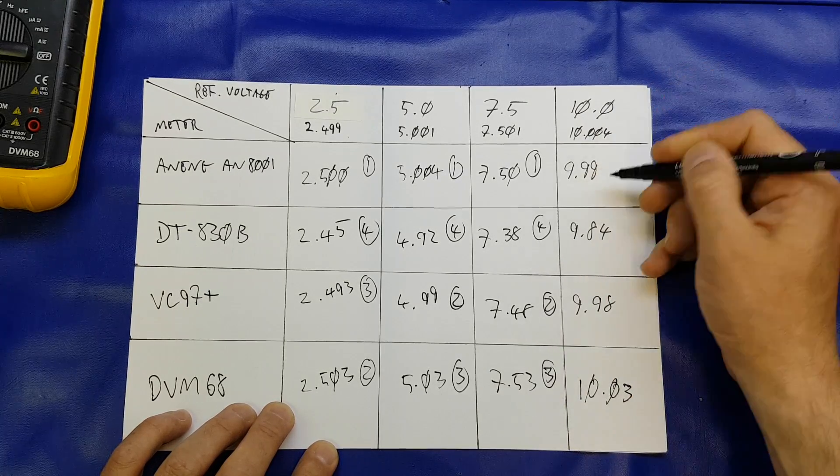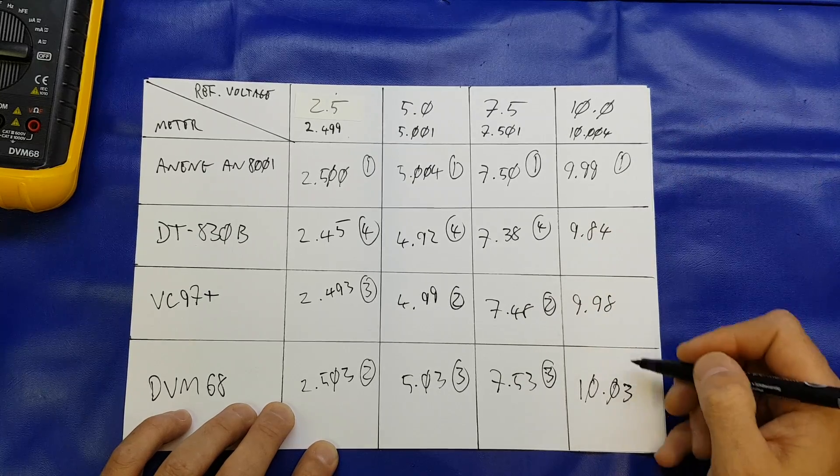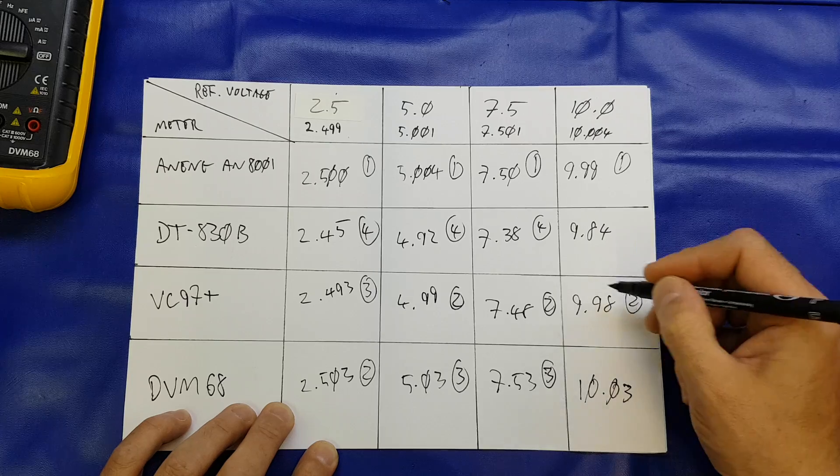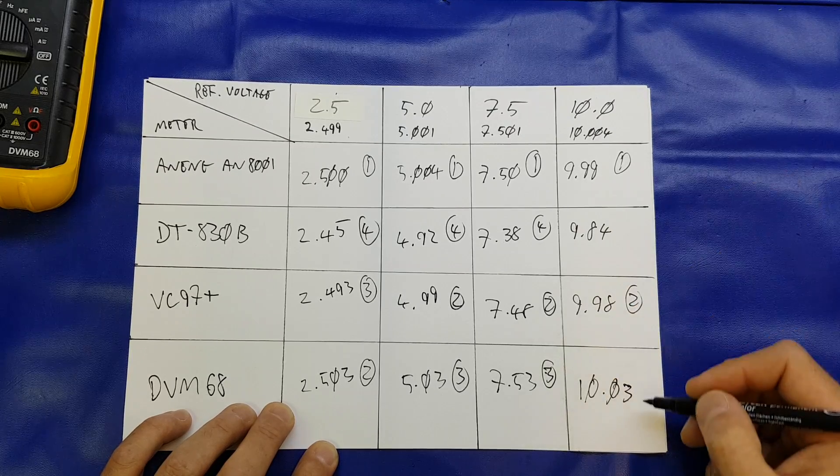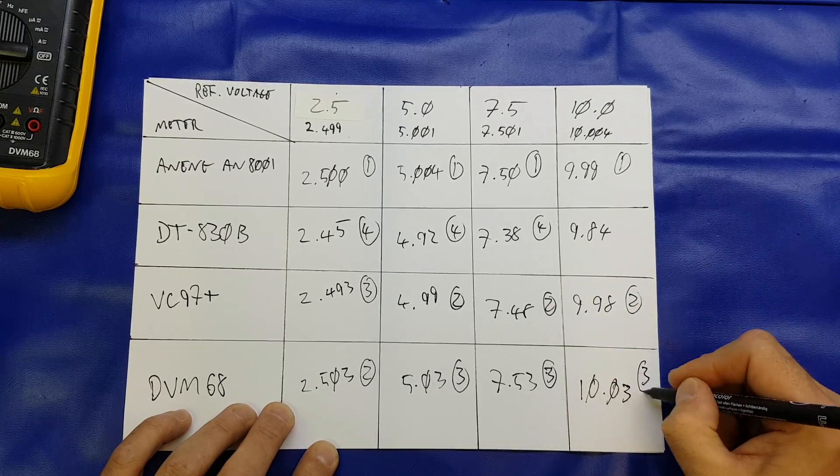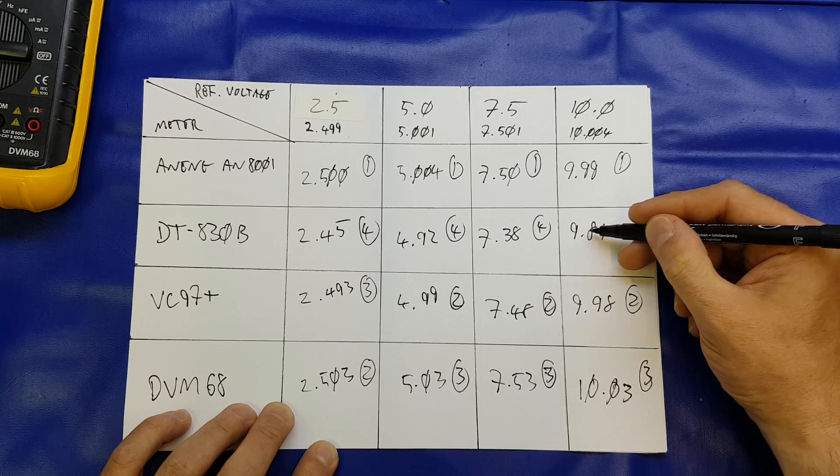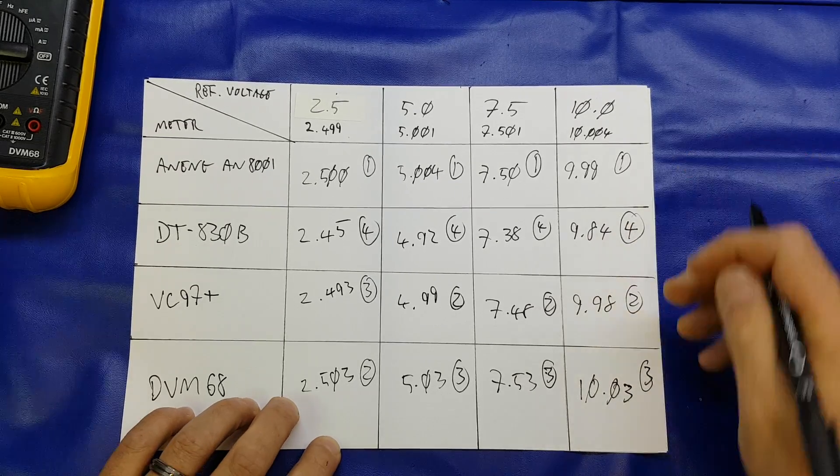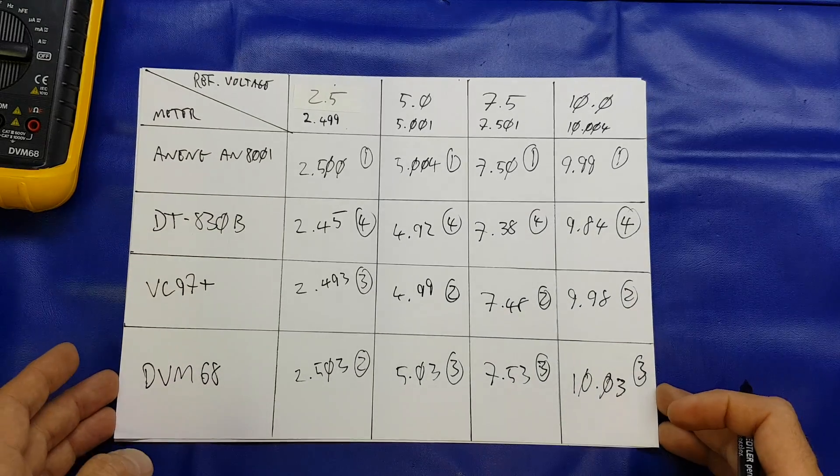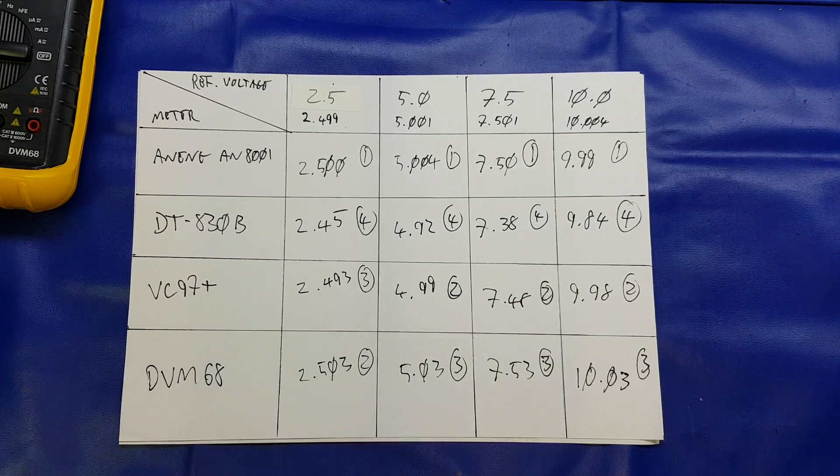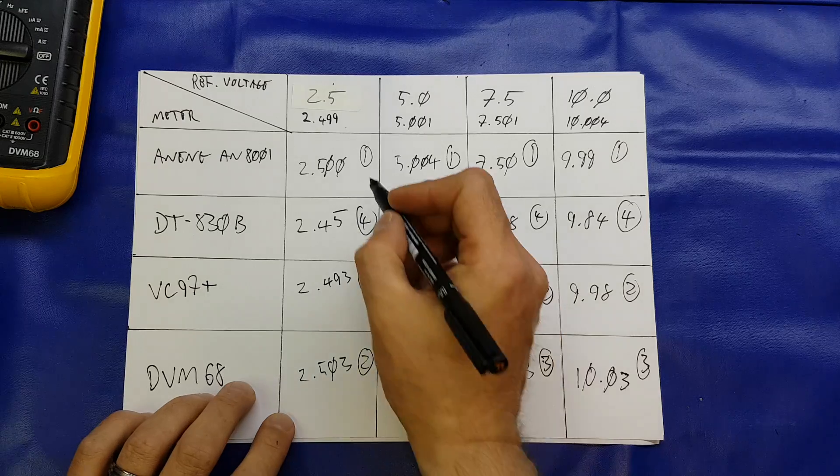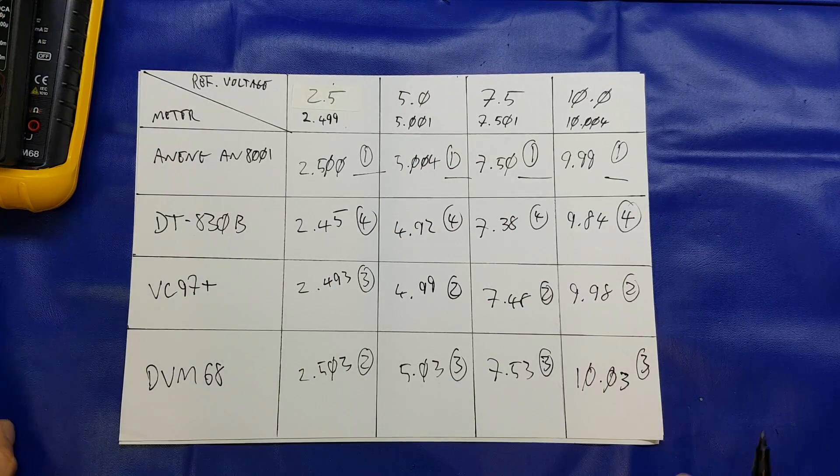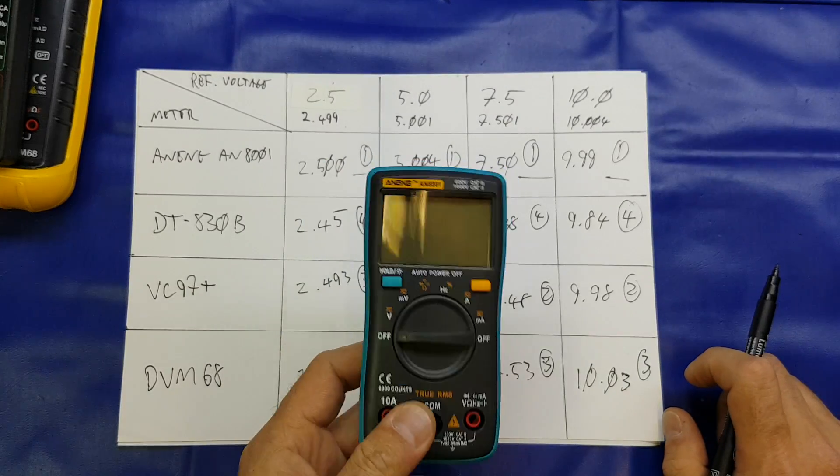At 10 volts, 10.00, so that's 0.01, so that's one, that's 0.02, 0.03, and that is 0.16, so there we have it, that's data analysis complete for what it's worth. And as you can see, a clear winner, the Aneng 8001, come in on first place on accuracy.